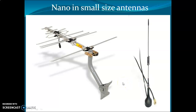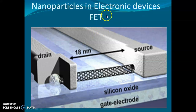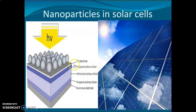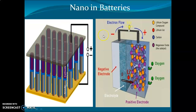Nanotechnology is used in antennas for TVs and the automobile industry. Electronic devices used in daily life are made from silicon oxide. Nanoparticles are used in solar cells — nanotechnology makes solar cells smaller while allowing them to store and convert more energy into electrical energy. In batteries, nanotechnology has dramatically reduced the space required for energy storage.